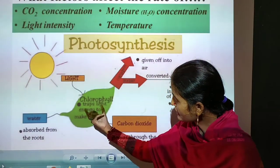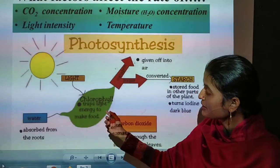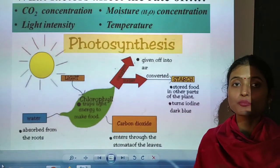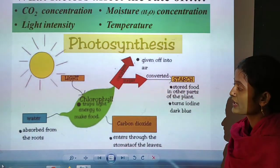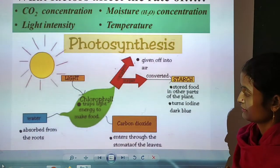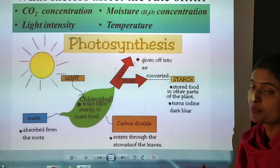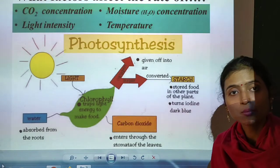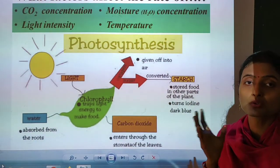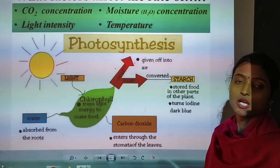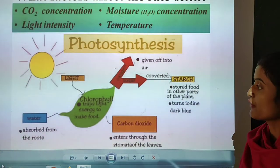And this is the chlorophyll, and chlorophyll traps light energy to make the food. Traps light energy to make the food after the absorbed water. And from where is water absorbed? Water is absorbed from the roots of the plant, from the roots of the plant.